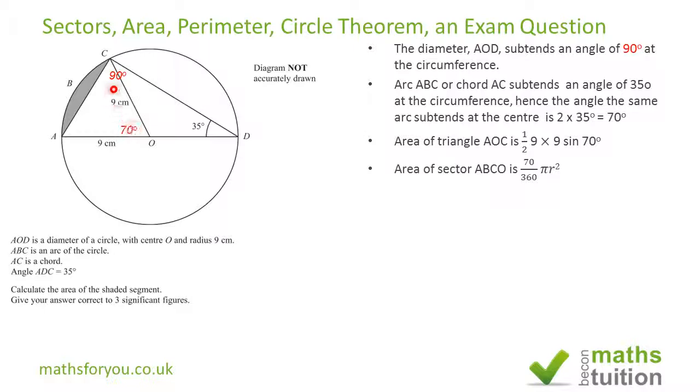So the area of this sector is a proportion of the area of the whole circle depending on this angle here - hence 70/360 πr².